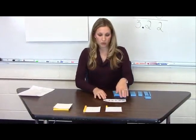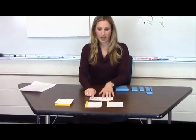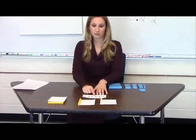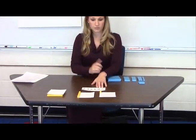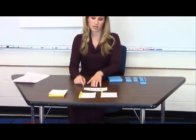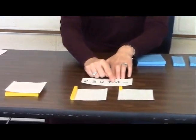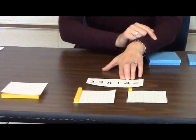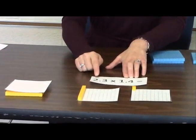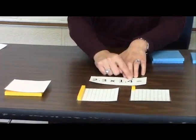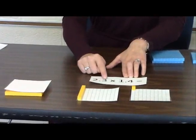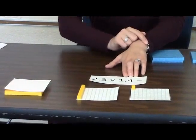We're going to explore the problem two and three tenths times one and four tenths. When I read this, I think of making two and three tenths groups of one and four tenths. Or, I'm going to make one and four tenths, two and three tenths of a time. And that's what I'm going to model for you.